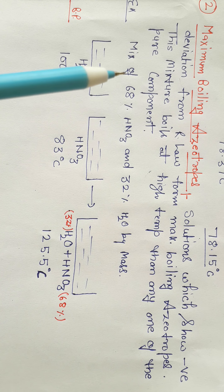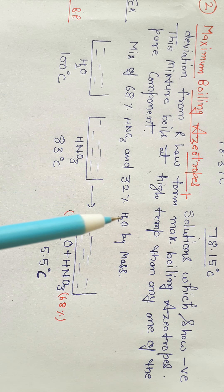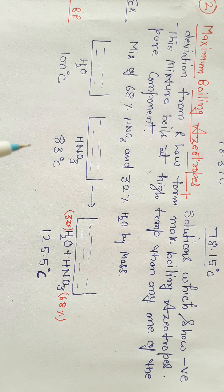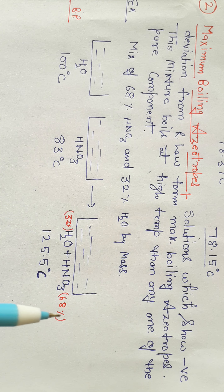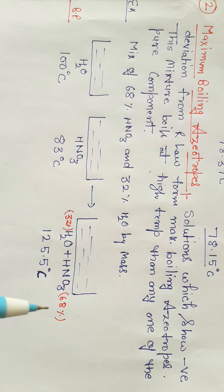An example is a mixture of 68% nitric acid and 32% water by mass. The boiling point of water is 100°C and nitric acid is 83°C. When we mix them in this fixed proportion — 68% HNO₃ and 32% water — the boiling point increases to 125.5°C, which is higher than both individual boiling points.